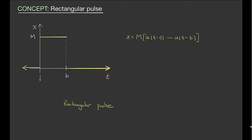Mathematically, what this would look like is a combination of two Heaviside functions: u of t minus zero, which we may just write as u of t, and u of t minus b. If you take the difference between these two functions, what you'll get is from zero to b you'll have a height of one, and elsewise it'll be zero. We take and multiply that by m, you get a height of m. This expression represents this pulse.